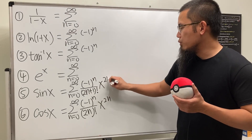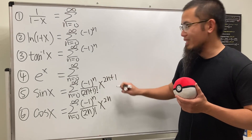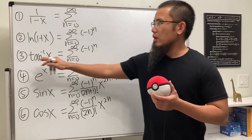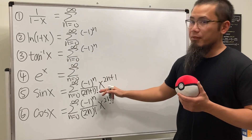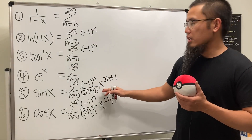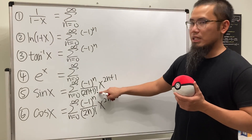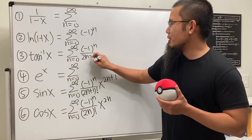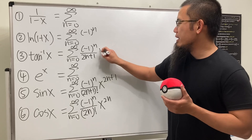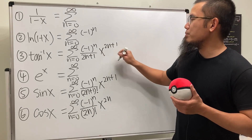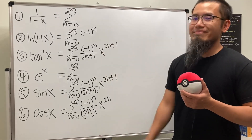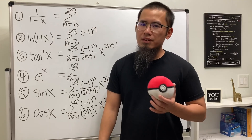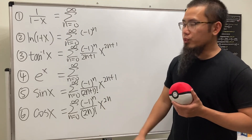Sine is odd, so we have the odd factorial: (2n+1)!, and x to the 2n+1 power. Notice this matches as well. Inverse tangent is also odd and very similar to sine — in fact it's just the same thing without the factorial, so we just have 2n+1 in the denominator and x to the 2n+1 power.